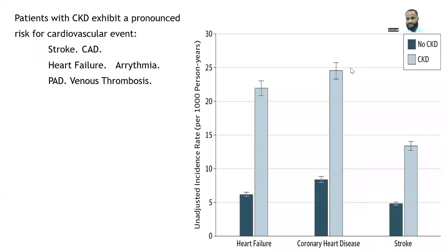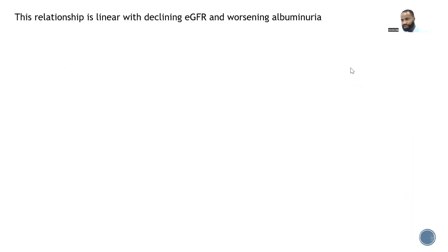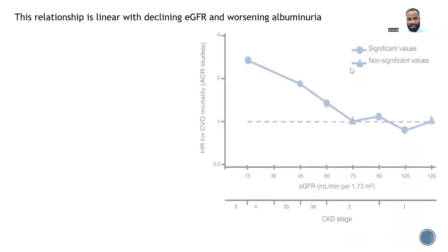The relationship is established and linear: with worsening kidney function, the incidence of cardiovascular disease increases. Similarly, with albuminuria, the incidence of cardiovascular disease also increases. This graph looks at the independent association of kidney function with cardiovascular mortality.